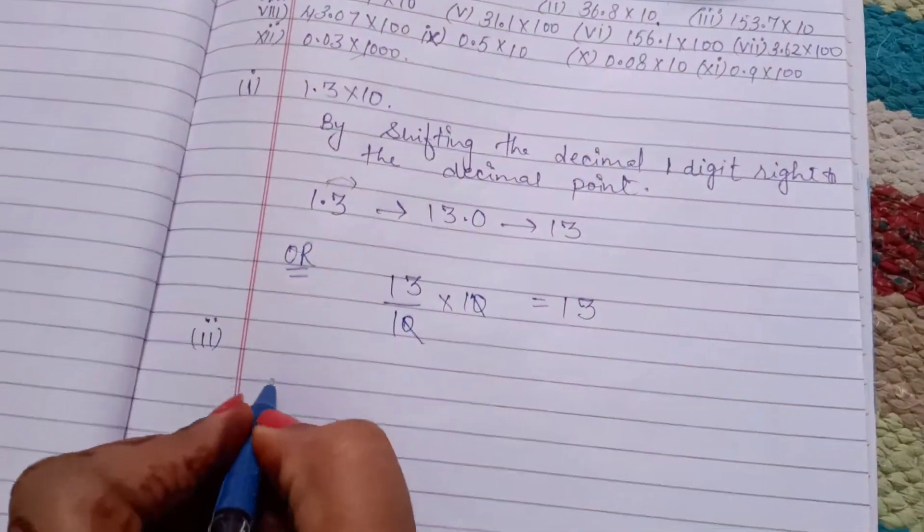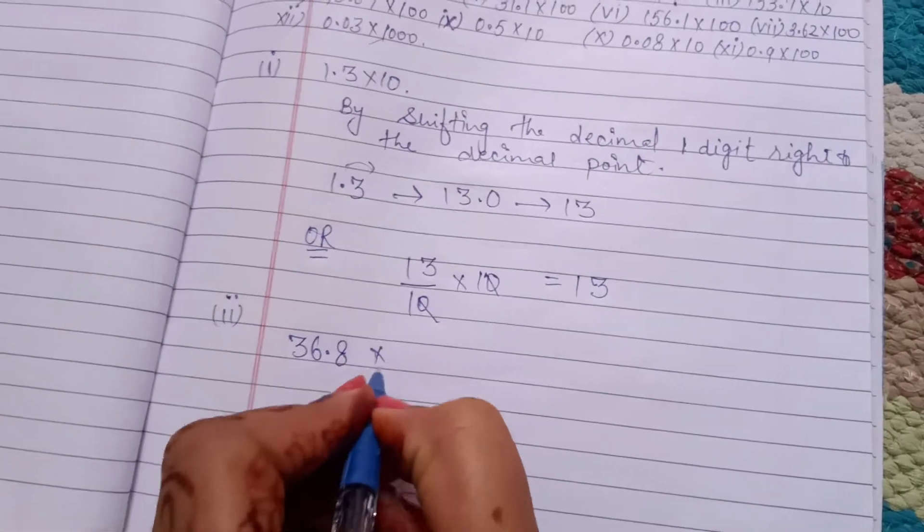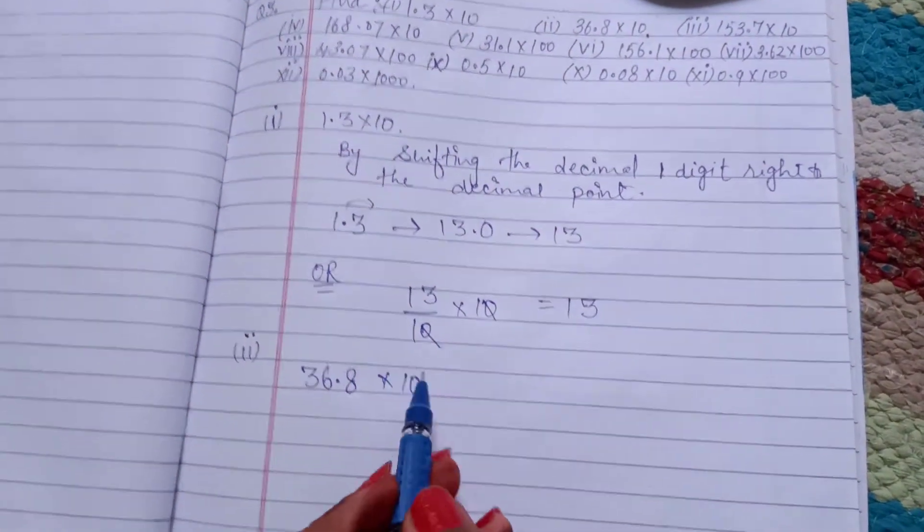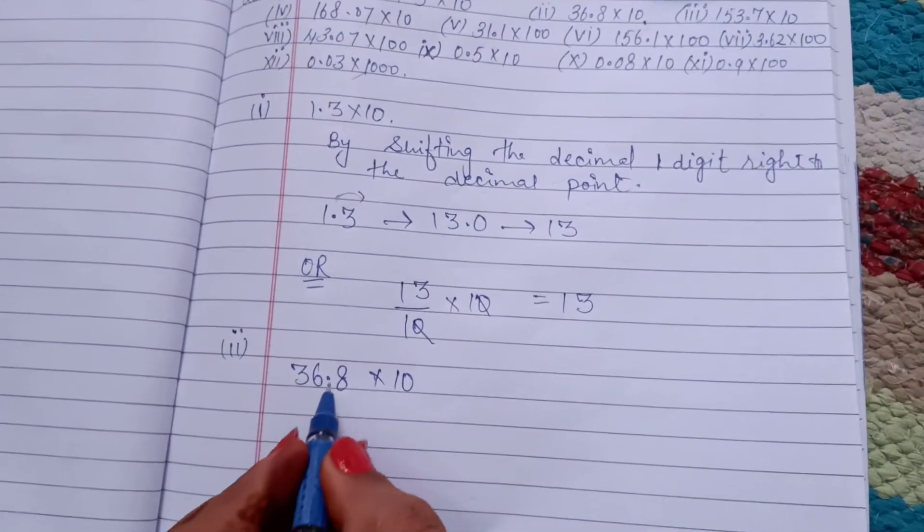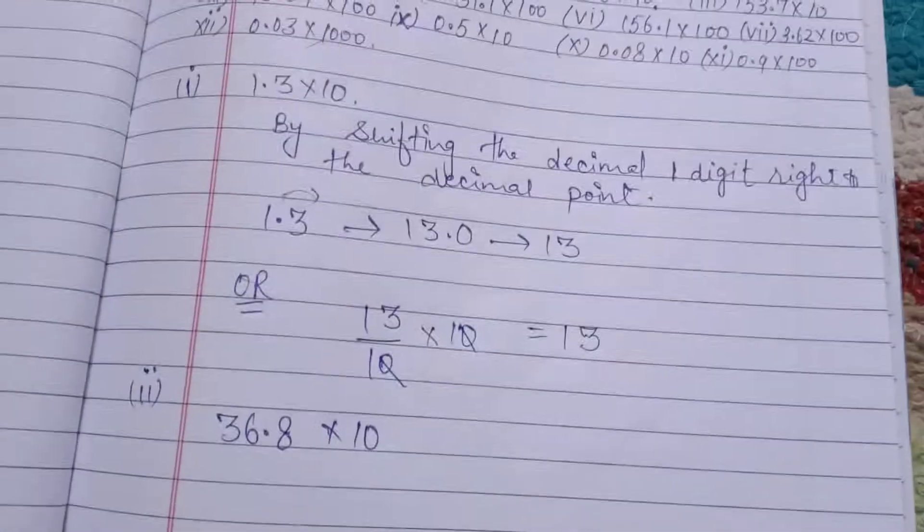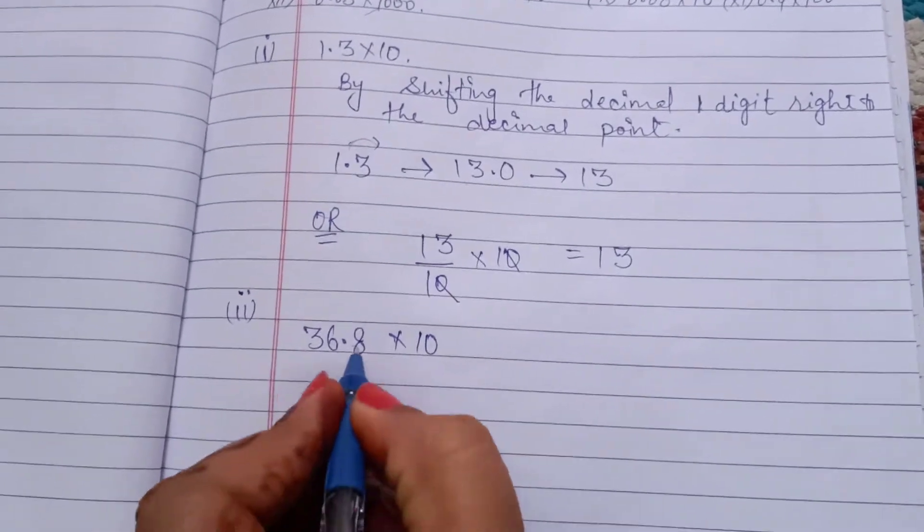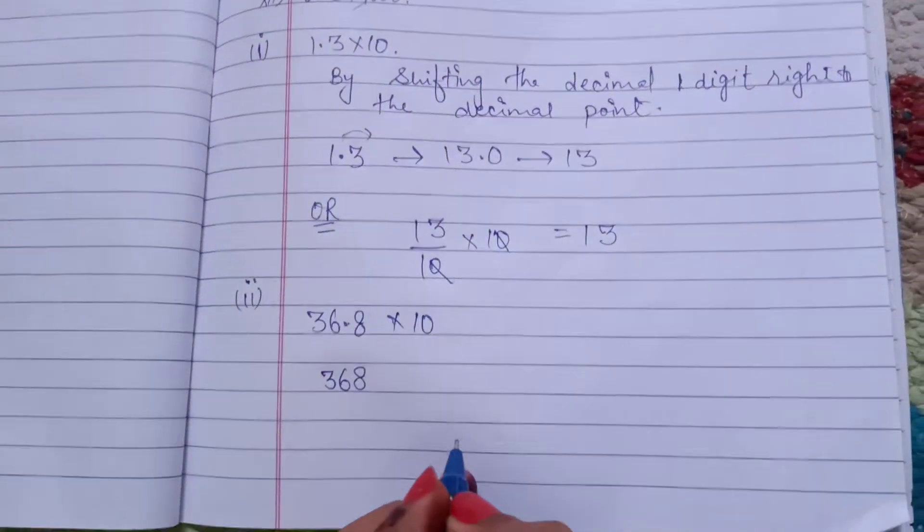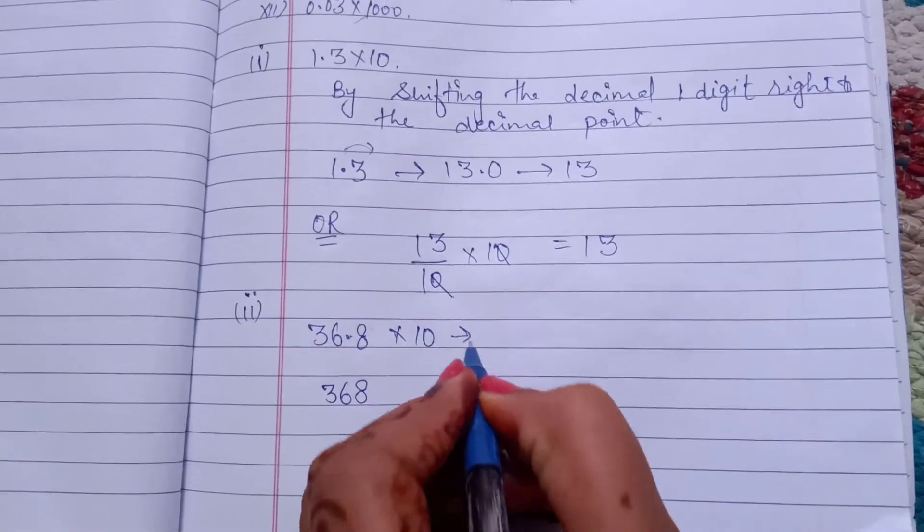36.8 into 10. Always this decimal move forward right hand side. Here multiply with 10, and this decimal shifted to one side. That is 36, and this point, decimal is shifted to another side, then it become 8.